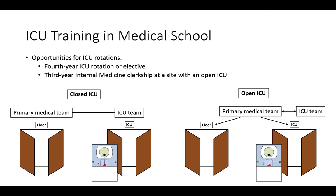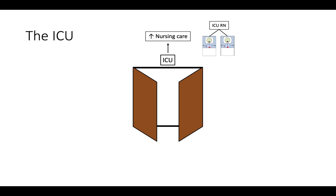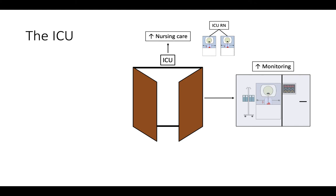Why transfer a patient to the ICU? What services does an ICU provide that allow us to care for the sickest patients? Patients in the ICU are able to receive more intensive nursing care. While nurses on the floor may work with anywhere from four to six patients on a given day, ICU nurses care for a maximum of two patients. The sickest patients in the ICU may even have a dedicated nurse. The ICU also allows for more frequent monitoring and data collection, including constant visualization of the patient, continuous vitals, and the ability to obtain more frequent labs and imaging.